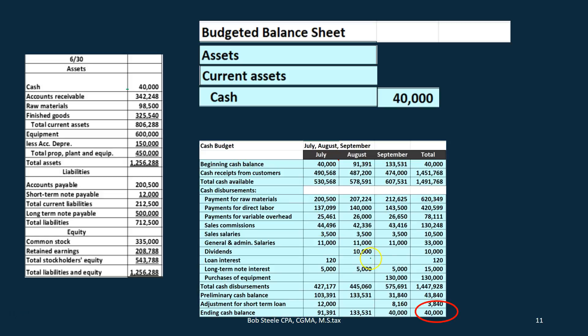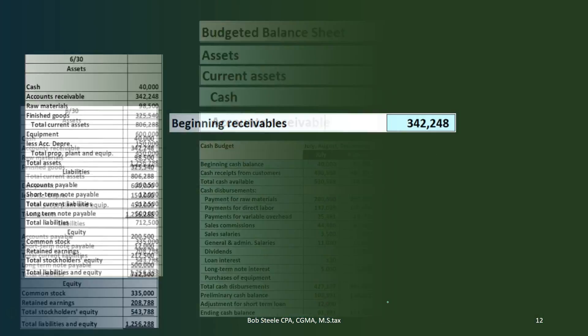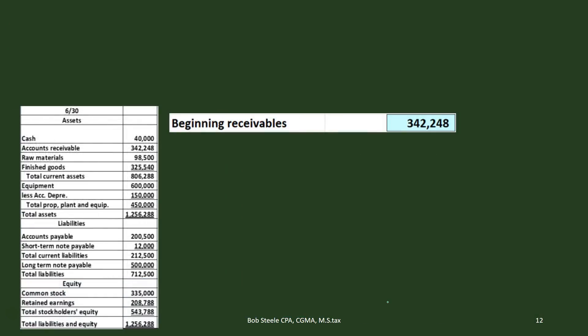This is the beginning $40,000, and this is the ending $40,000. The reason they're the same is because we made it the same in order to keep our minimum balance at $40,000 by taking out a loan — in this case, the loan at the end for that $8,160. Then we have accounts receivable. We're going to have to do a bit of a calculation to figure out what the ending balance in the accounts receivable is.